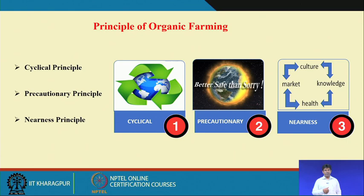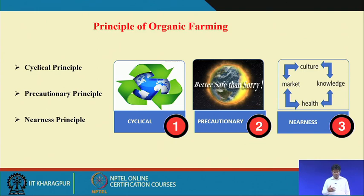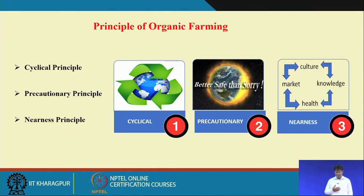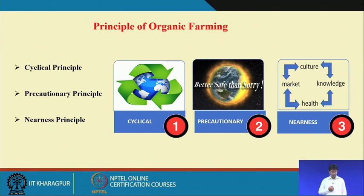Now we go to the principles of organic farming. There are three basic principles: the cyclical principle, the precautionary principle, and the nearness principle. The cyclical principle discusses close recycling and the crop cycle — growing one crop after another from different groups; the same crops should not be repeated season after season. By changing crops, we minimize pest and disease populations and maintain soil fertility long-term.